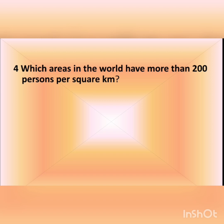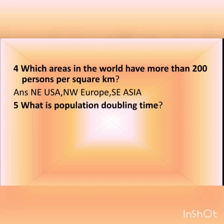The fourth question is: which areas in the world have more than 200 persons per square kilometer? The answer is Northeast USA, Northwest Europe, and Southeast Asia.